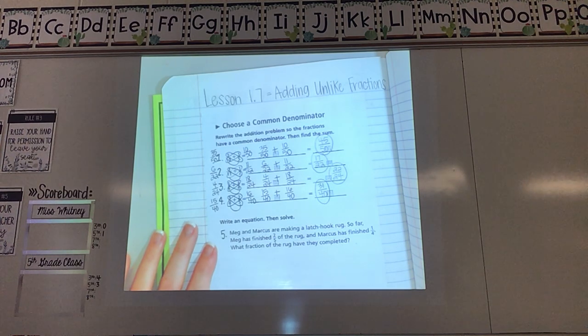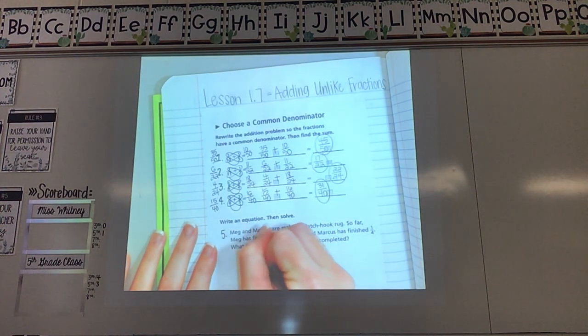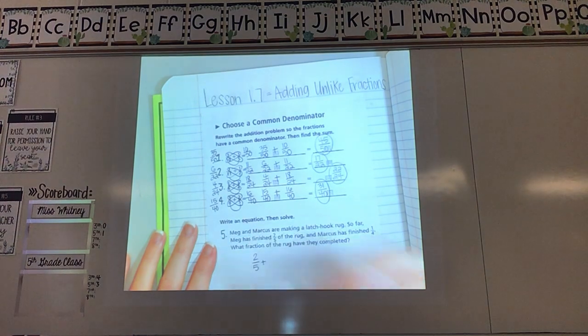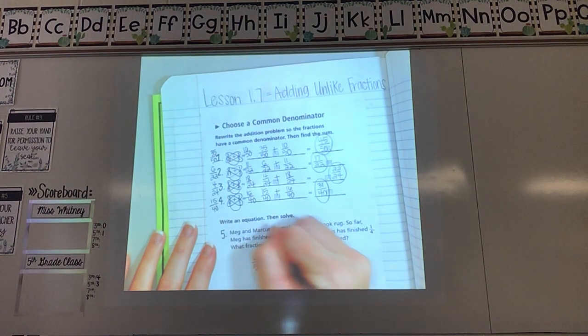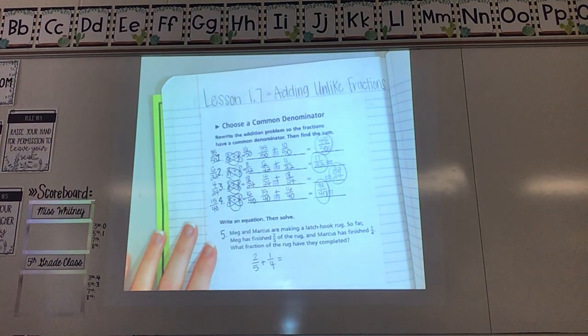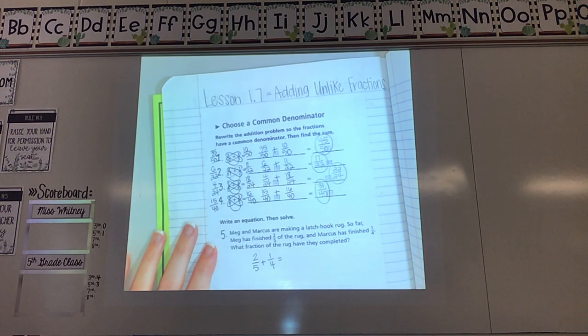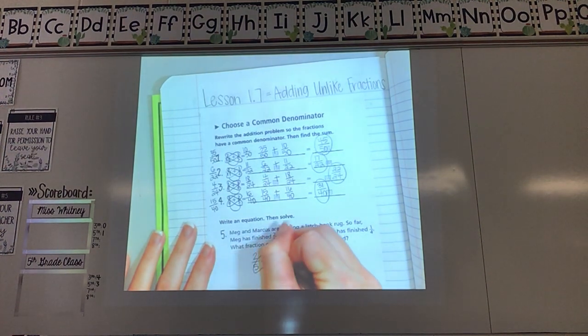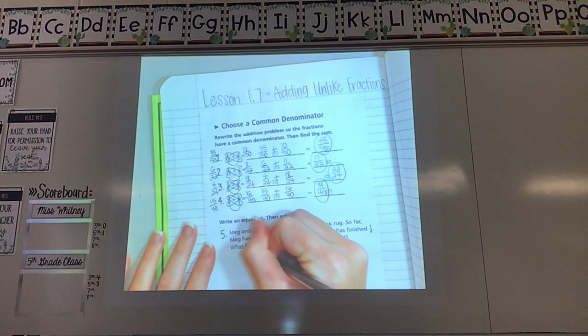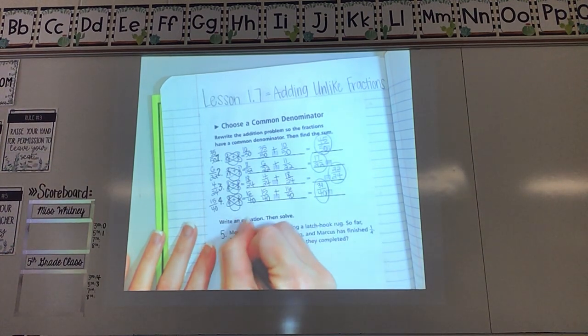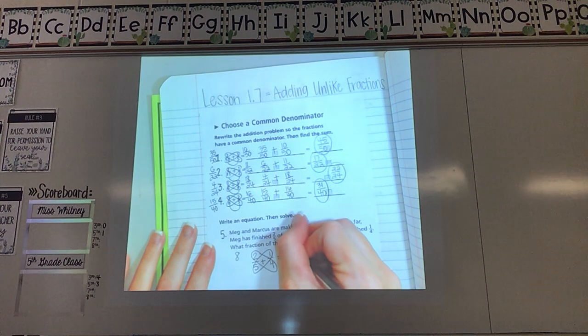I'm going to be adding to figure that out. So I'm going to add 2 fifths plus 1 fourth. Can I do 2 fifths plus 1 fourth? No. The bottom numbers have to be the same. So let's fix this. First cross multiply. Making my ovals if I need to. 4 times 2 is 8. 5 times 1 is 5.